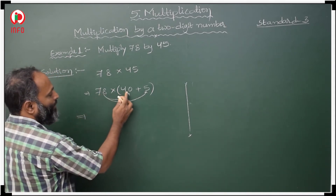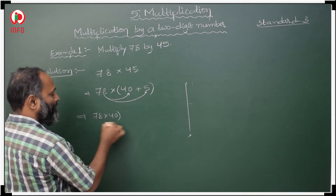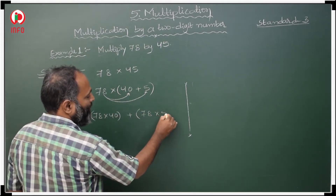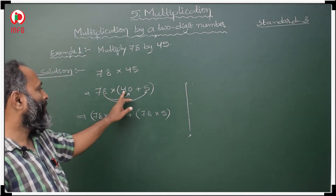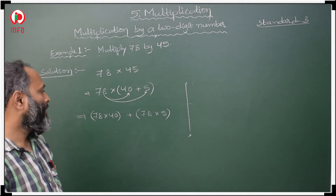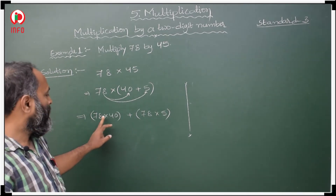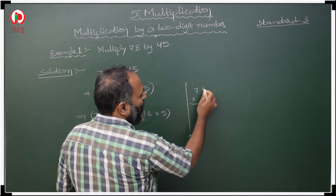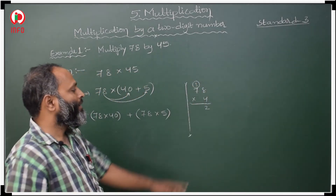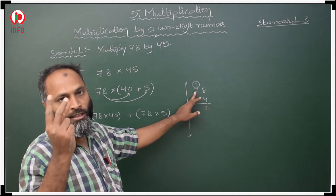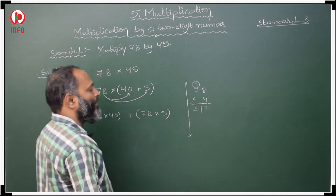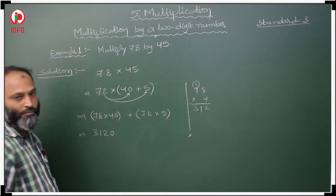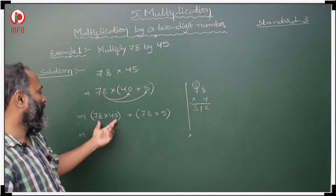How? 78 with 40, then plus 78 with 5. Now 78 with 40: first you multiply 78 with 4. 4 eights are 32, 3 tens; 7 fours are 28, carry over to get 312. Here in 40, zero is there, that zero we have to keep. So 78 into 40 is 3120.